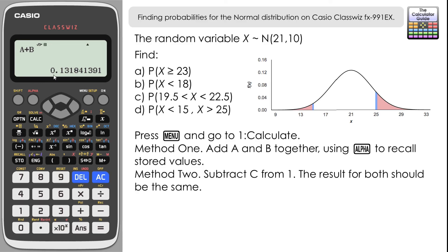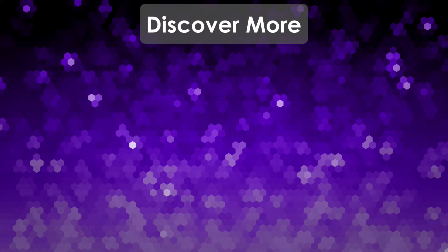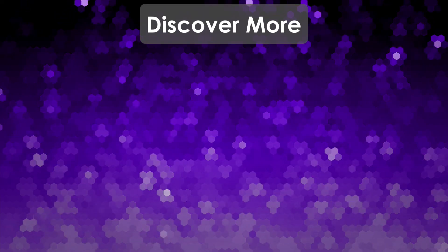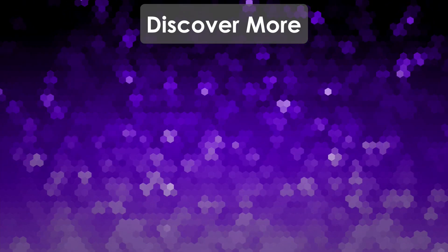Now go to Menu and into Calculate mode. For method one: A + B, press equals — the probability is 0.1318 to four decimal places. Alternatively, method two: 1 − C, press equals — same value. Both methods give the same answer, as expected. I would suggest method two is a little quicker, as you only need to use the distribution input screen once, store it in memory, then compute one minus that result in Calculate. Either method is fine. Don't forget to subscribe for future videos — thanks very much for watching, and I'll see you next time on the Calculator Guide.